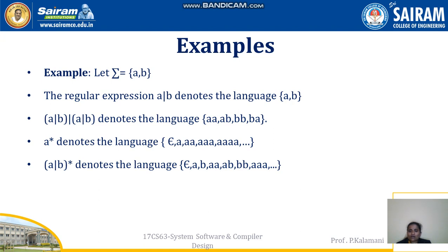(A|B)* denotes the language of all strings over {A, B}, including epsilon, A, B, AA, AB, BA, BB, AAB, ABA, and so on. For more examples, you can refer to the textbook. Thank you.